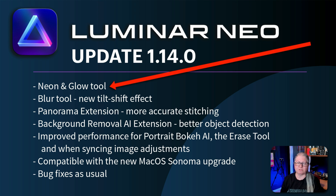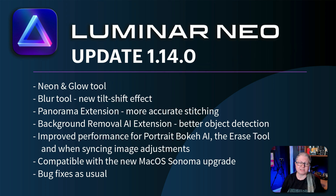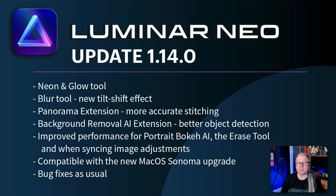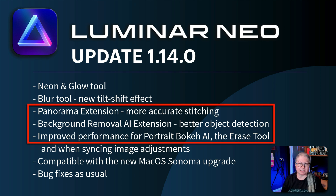We've already talked about the Neon and Glow tool — that's the major update added to Luminar Neo with this version. The next thing is the Blur tool, which has received a major upgrade. They've added a fourth option called Tilt Shift, which replicates the style of using that kind of lens. In addition, you'll see improved stitching with the Panorama extension.